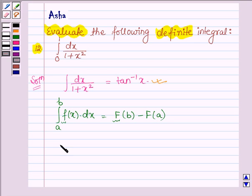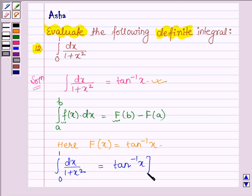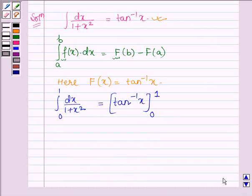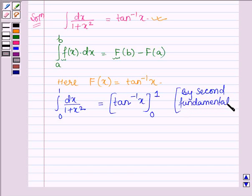From here, we find that fx, which is the antiderivative of the given function, is tan inverse x. Therefore, integral dx upon 1 plus x square from 0 to 1 is equal to tan inverse x from 0 to 1, which is by the second fundamental theorem.